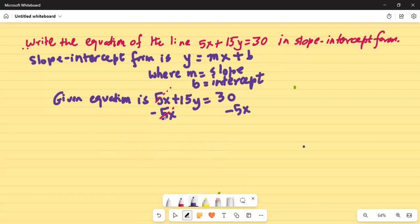On the left-hand side of the equation, I have 15y because the 5x's cancel. This equals negative 5x plus 30 on the right side.